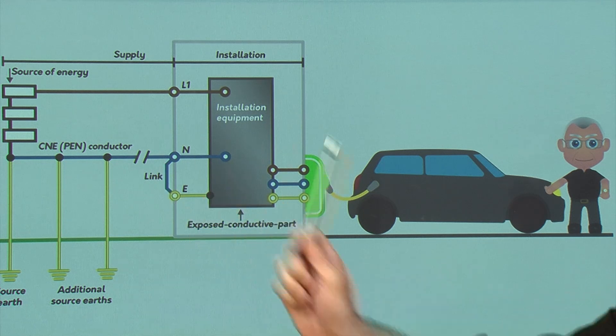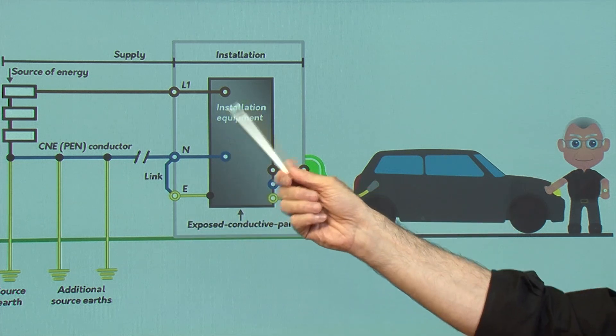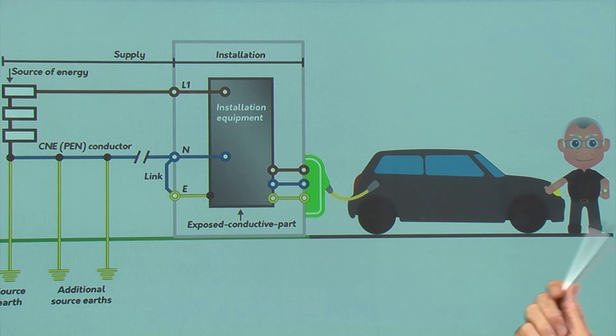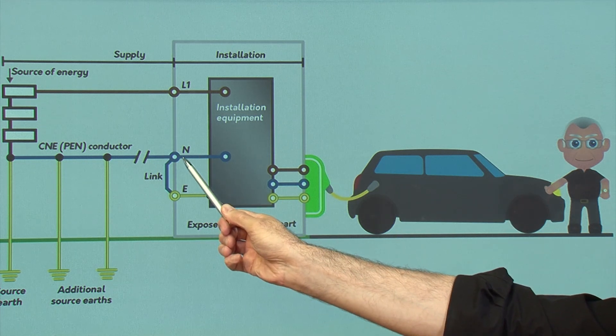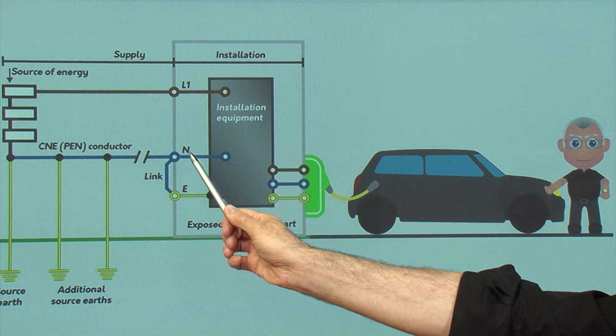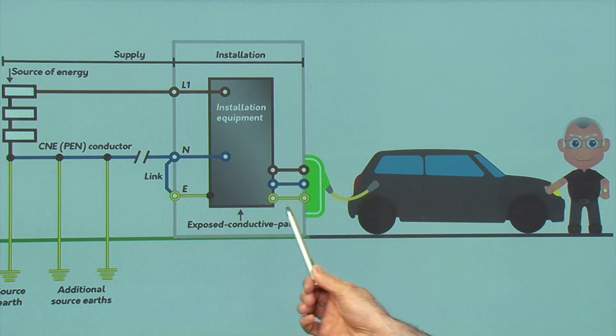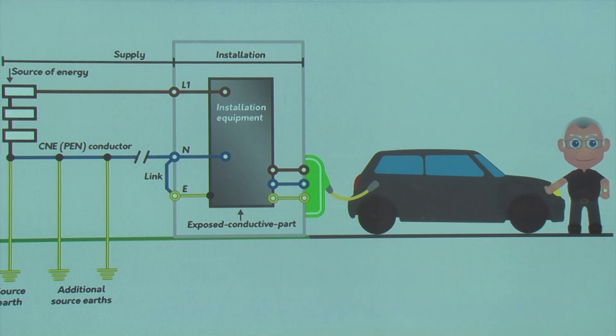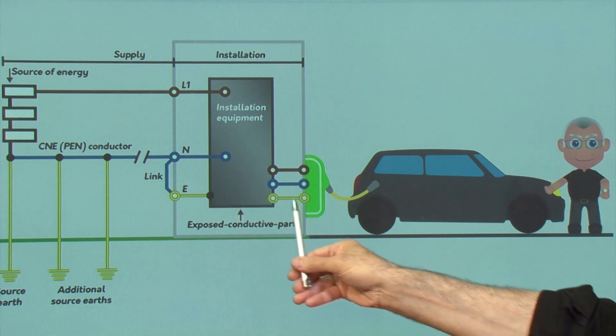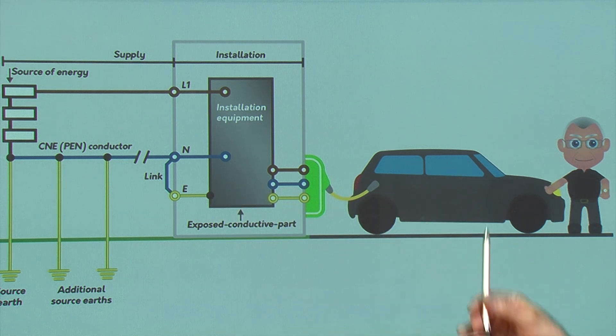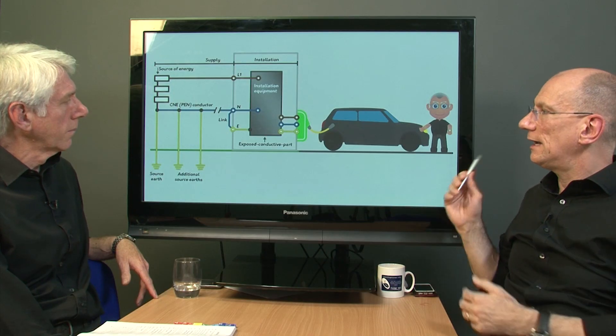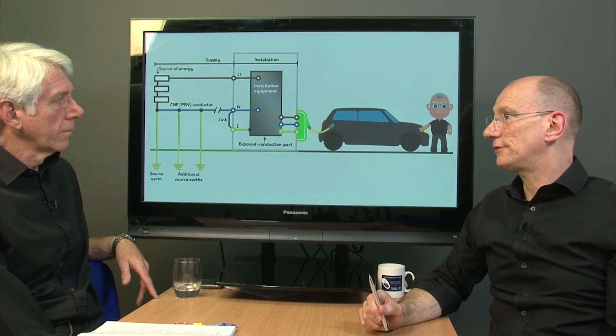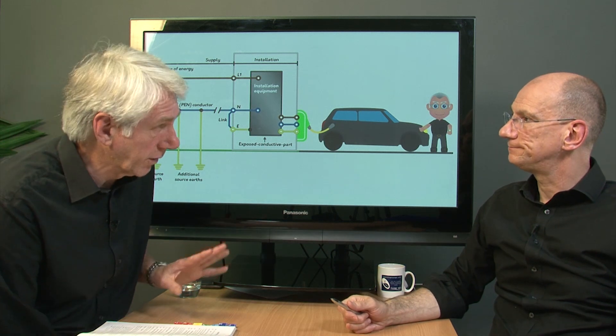So if you end up with a broken neutral, the return path will look for an alternative way to get back. And what it does is it comes back to the neutral point in the installation, and there's a link there to the earth. It will try and find an alternative path. And if you've got gas pipes, water pipes, it will try and go down there. But in this particular case, we've exported it out through to this vehicle. So if you've got a person in contact with that vehicle and touching earth, this will be a raised potential, and you are at risk of electric shock, which could be fatal. So there's the problem that the regs are trying to sort out.